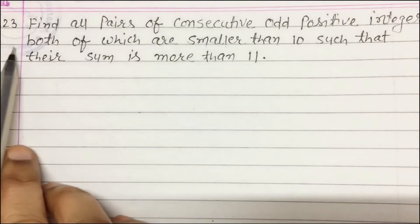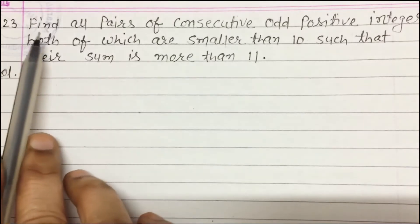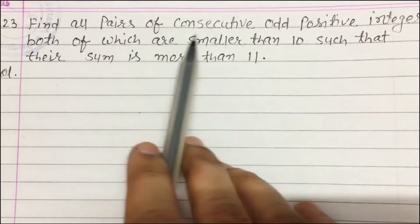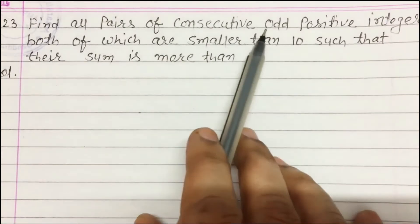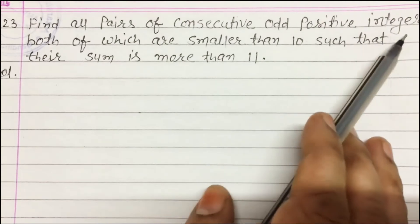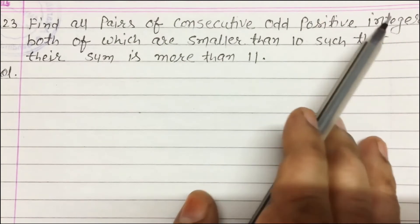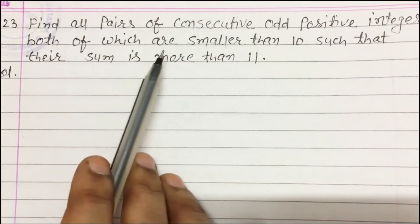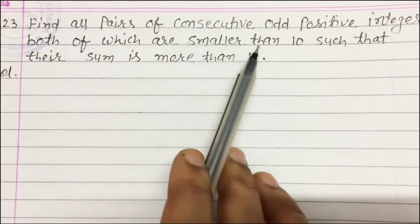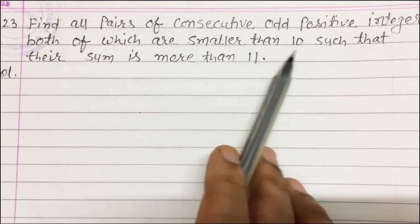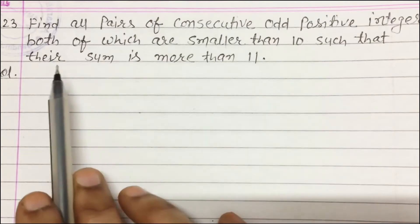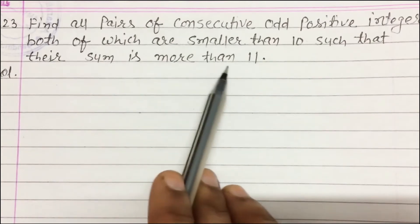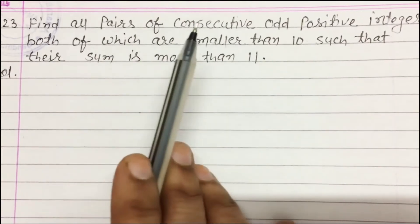Question number 23: Find all pairs of consecutive odd positive integers, both of which are smaller than 10, such that their sum is more than 11.